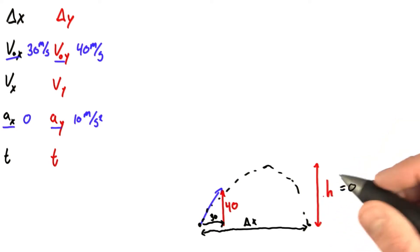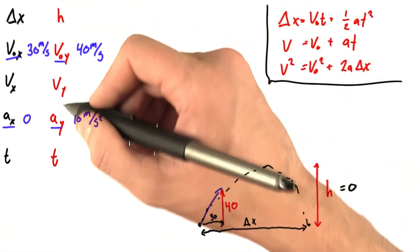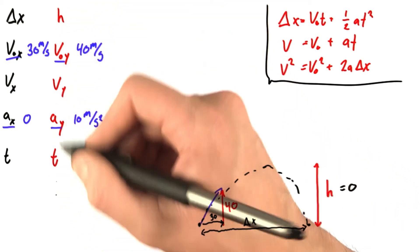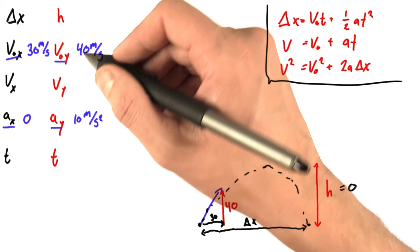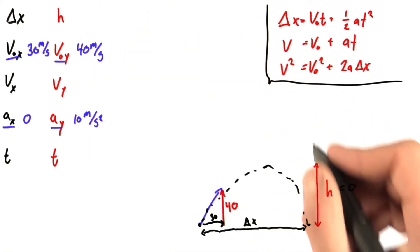Just like I did before, I'm going to approach this problem by looking at the vertical component first. Now actually, this seems like it could be pretty difficult. I've only got two pieces of information. But that's not entirely true.